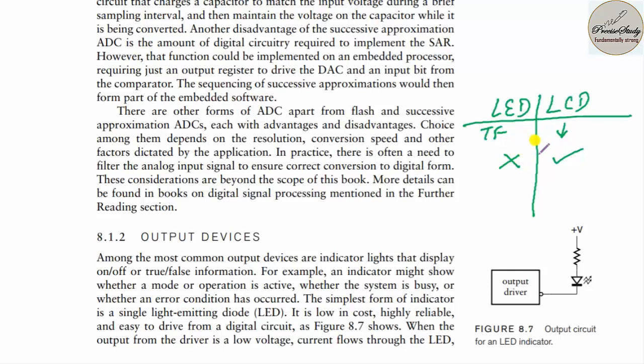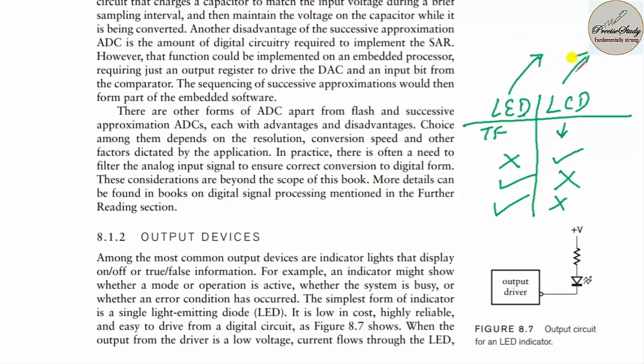For television, early days used vacuum tubes, then flat TVs, then LCD and LED displays. Now there is UHD display — curved TVs. In terms of clarity, LED displays are clearer than LCD displays. Cost-wise, LED displays are more expensive than LCD displays. LED stands for light-emitting diode; LCD stands for liquid-crystal display.